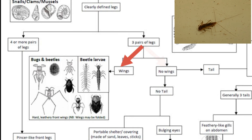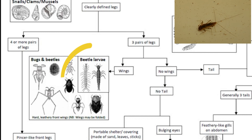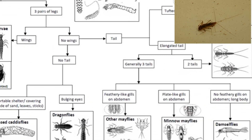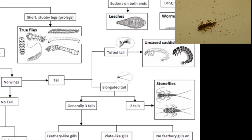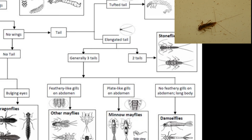The next question relates to the presence or absence of wings. This could be tricky, as many beetle and bug larvae do not have wings clearly present. If, however, it looks like the picture, it is quite possibly a beetle or bug larva. This one, however, is not. Next, the presence or absence of a tail. Our one does have a tail clearly visible. It also has an elongated tail instead of a tufted tail, so we can move on to that square. It also has three tails present and this, therefore, excludes the stoneflies.